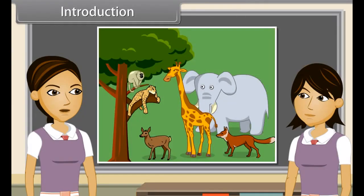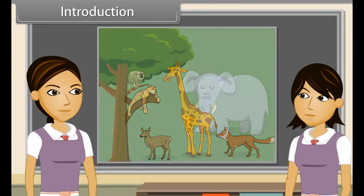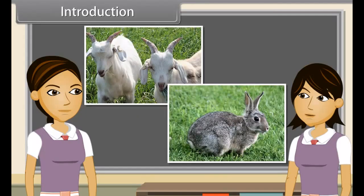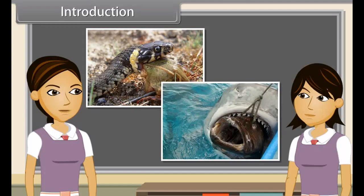There is a wide variety of animals on the basis of their type of food. Many animals eat only plants like grasses and leaves, while some of them eat other animals. The big fish eat small fish, birds eat worms and insects, snakes eat frogs, and some insects eat dead bodies of animals.